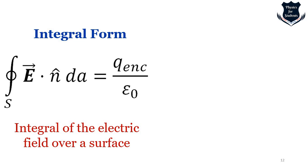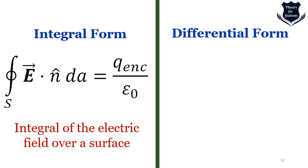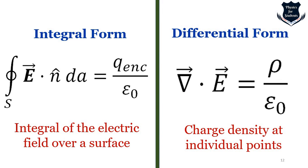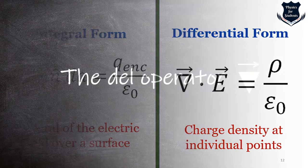There is a fundamental difference between the differential and integral forms of Gauss's law. The integral form entails the integral of the normal component of the electric field over a surface. The differential form deals with the divergence of the electric field and the charge density at individual points in space — it is a local approach. Divergence arises from this point concept, and we will explore it further.